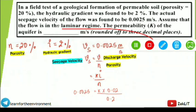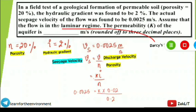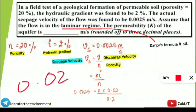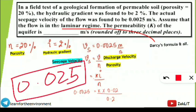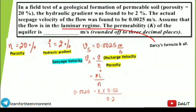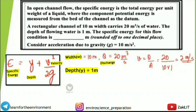Solving for k: k = 0.0025 / 0.1 = 0.025 m/s. Rounded to three decimal places, the answer is 0.025. Note down these formulas: vs = v/n and v = k·i. These are the key chocolate formulas for this type of question.